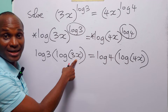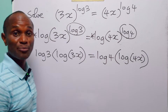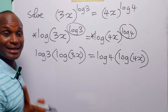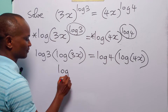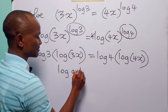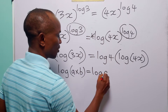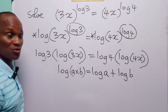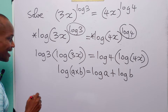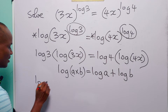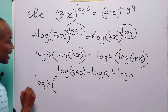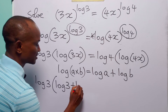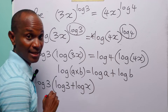Now, 3x and 4x are products — this is 3 times x and this is 4 times x. Remember that log(a times b) is equal to log a plus log b. So we can write the left-hand side as log 3 times (log 3 plus log x).